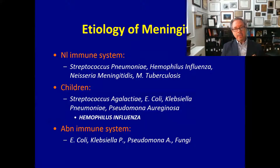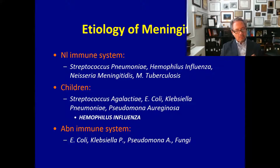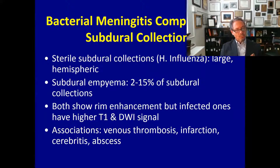Regarding the etiology of meningitis: in the normal immune system, S. pneumoniae is the most common pathogen. In patients with an abnormal immune system, you find other etiologies such as E. coli and Klebsiella. In children, Haemophilus influenzae is a very common etiology of meningitis and can lead to significant complications.